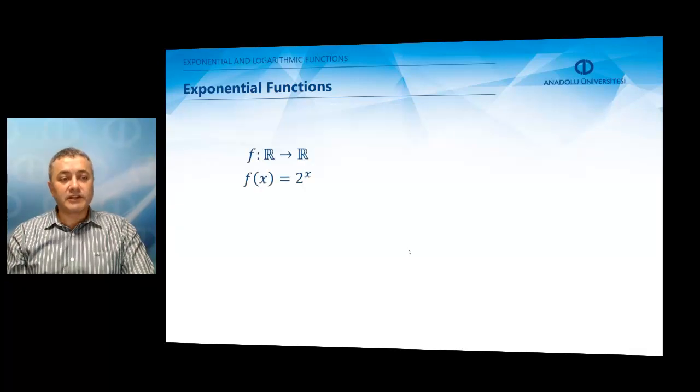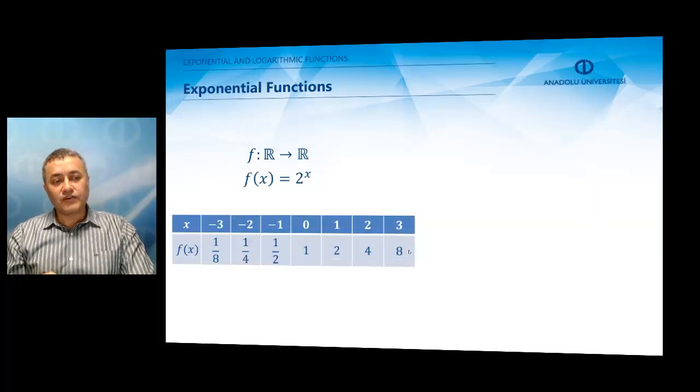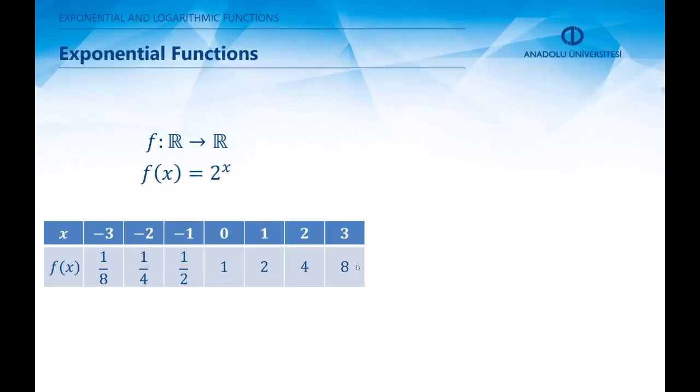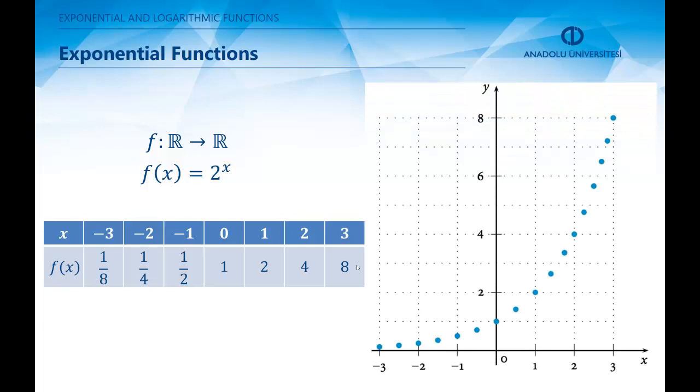Let us try to plot the graph of the exponential function 2^x. If we create this table and insert some certain values of x into the function, we see that for x = 0, the function takes the value 1. For 1, 2, and 3, the function takes the value 2, 4, and 8.